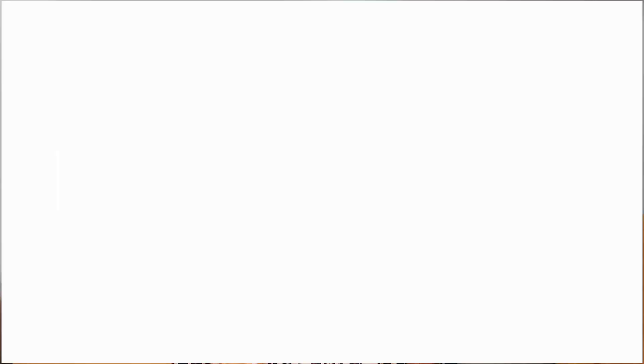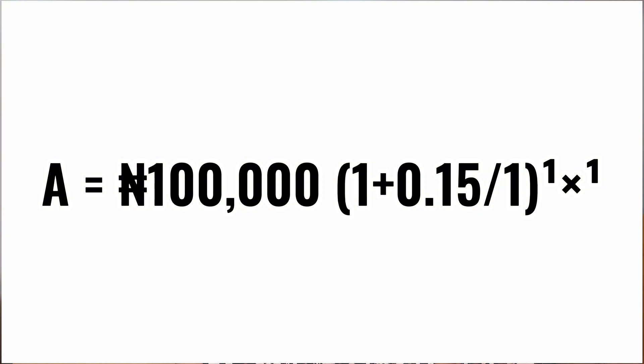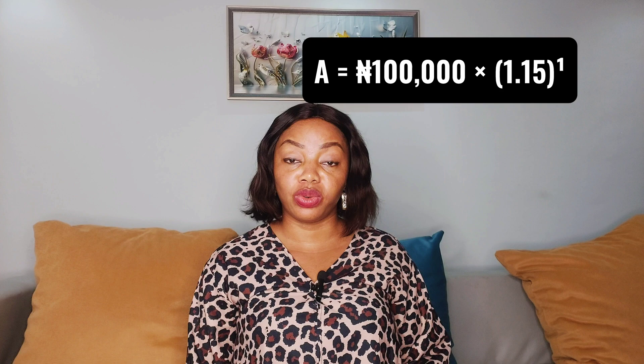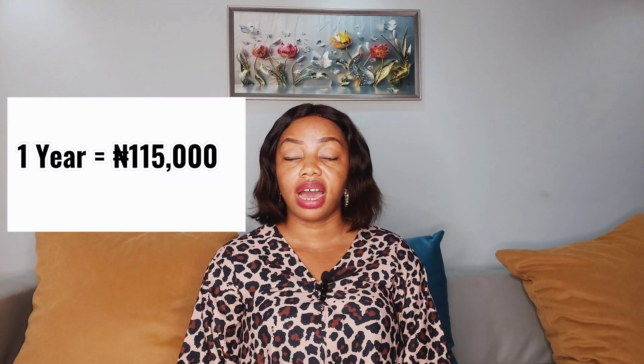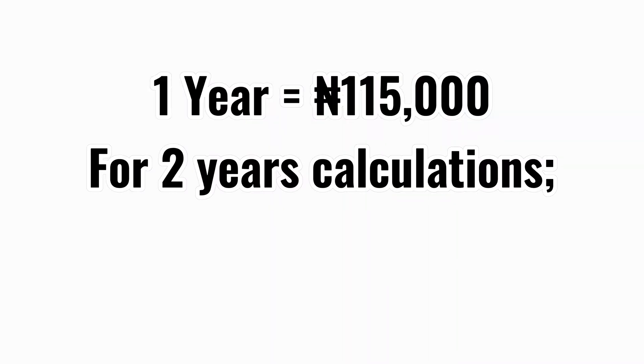Look at this equation: A equals 100,000 times the quantity (1 plus 0.15 divided by 1) raised to the power of 1 times 1. You can simplify this to A equals 100,000 times 1.15, which gives you 115,000. After one year, your money has grown to 115,000.